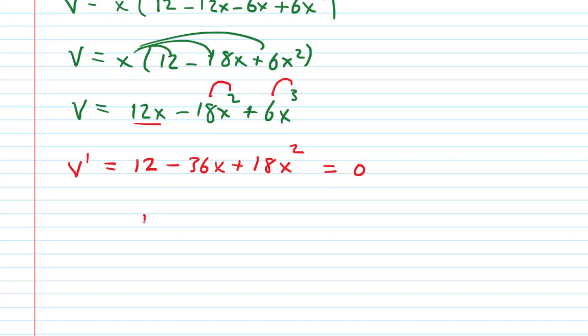It would help us if we rewrote this in a standard order. So we'll have 18x squared minus 36x plus 12. Set this equal to 0. We could simplify this by dividing each term by 6 including the 0. This leaves us with a simplified derivative of 3x squared minus 6x plus 2 is equal to 0.